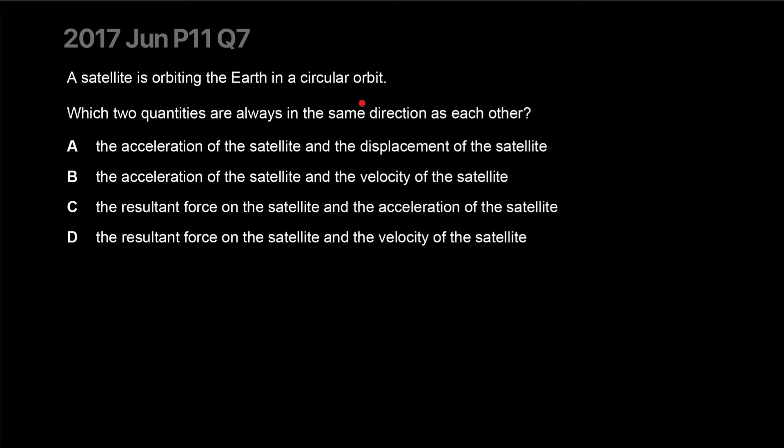A satellite is orbiting the earth in circular orbit. Which two quantities are always in the same direction as each other? The acceleration of the satellite and the displacement of the satellite. The displacement, if you think about it, or the acceleration of the satellite compared to the planet, let's get some realism in here. So the displacement is going, where will this be in one minute? Over here. So this is the displacement of the satellite.